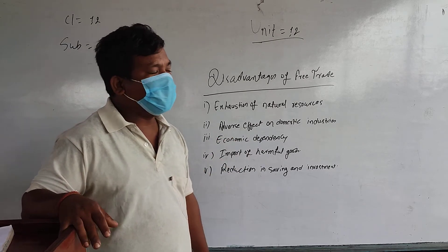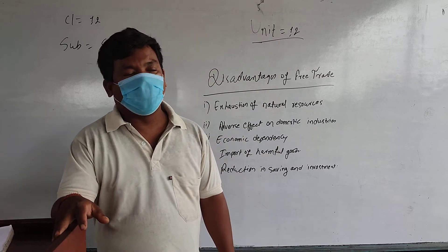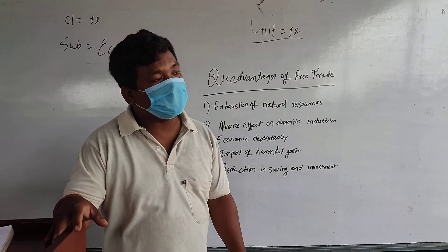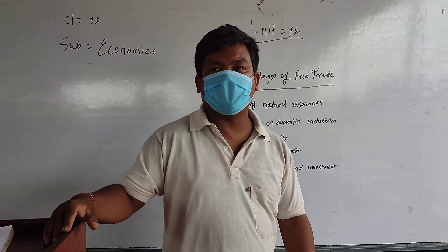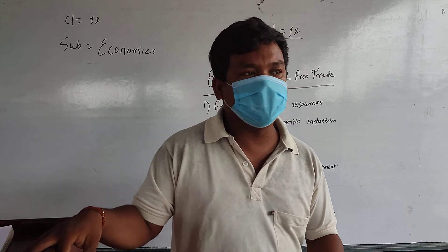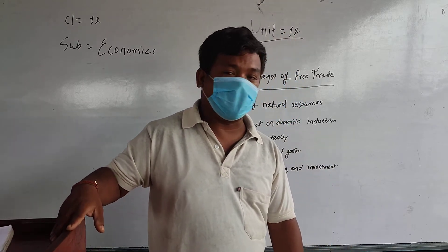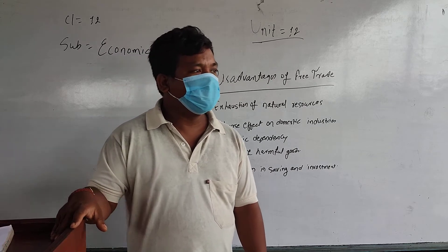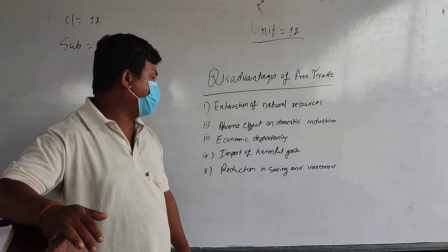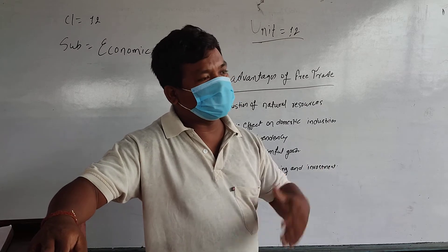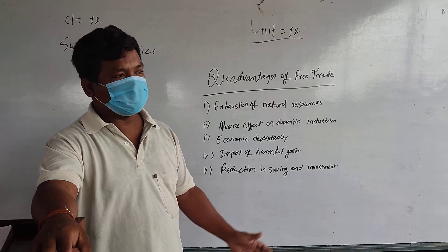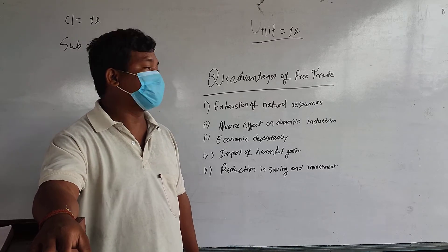Number 3 is Economic Dependency. Under a free trade policy, developing countries will try to produce only those goods and services which have a very low production cost. They will not try to invest in industries where the production cost is very high. As a result, they will try to import all those goods from developed countries. When they import goods from developed countries, along with those goods, they will over time also demand cash, take loans, and seek donations.